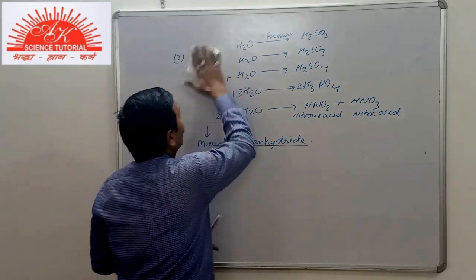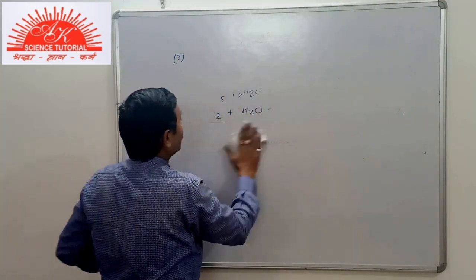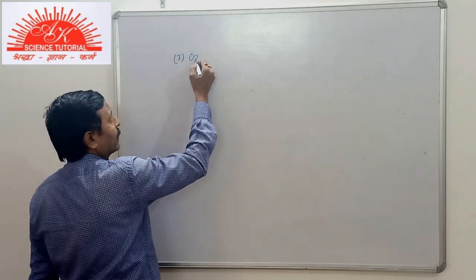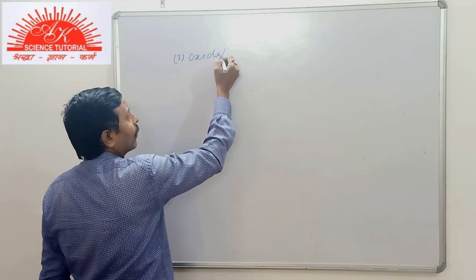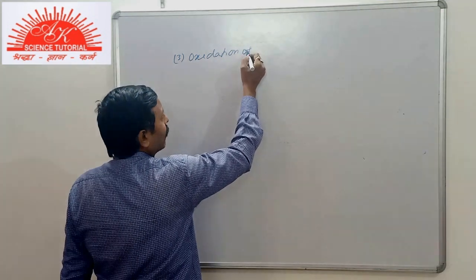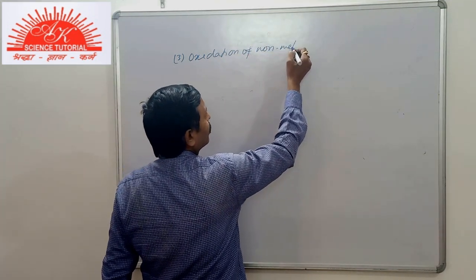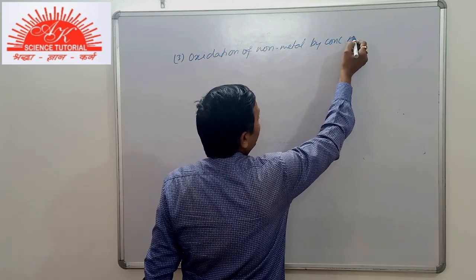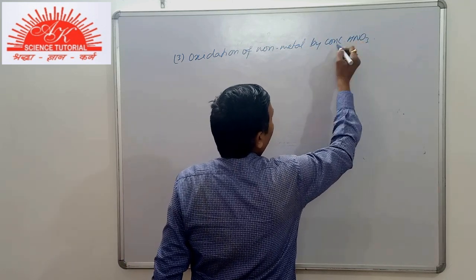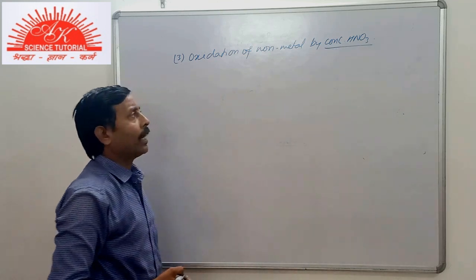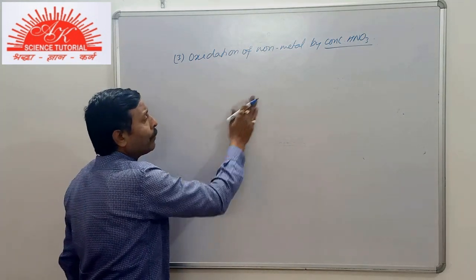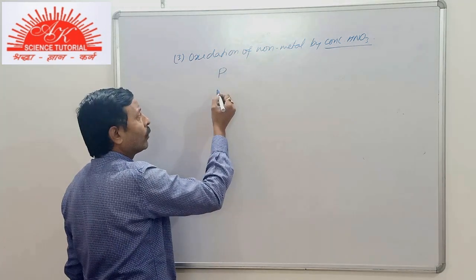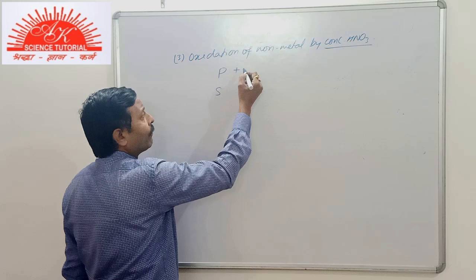Oxidation of non-metal by concentrated nitric acid, which is a strong oxidizing agent. And we prepare generally two acid. One, phosphoric acid. Another, sulfuric acid.